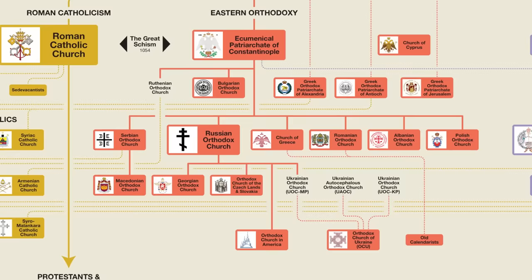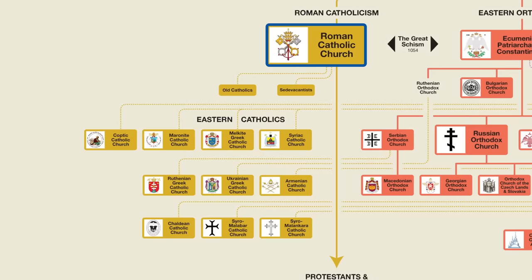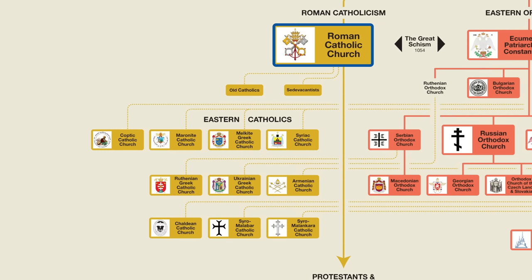Let's now talk about the Roman Catholic Church — by far the largest church in all of Christianity, with well over a billion members representing more than 50% of all Christians. When most people refer to the Roman Catholic Church, what they're really referring to is the Latin Church, which is actually just one of 24 churches that make up the entire Roman Catholic Church. The other 23 churches are Eastern Catholic Churches, which we'll be talking about shortly. But since 99% of Catholics belong to the Latin Church, let me take a moment to explain how the church organizes those one billion plus members.